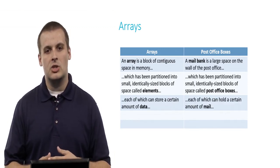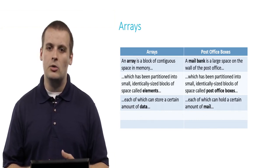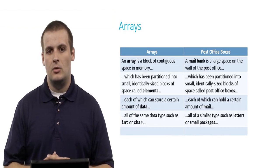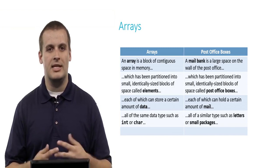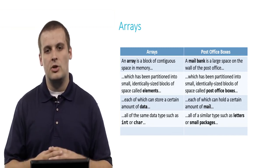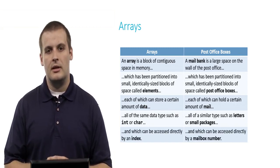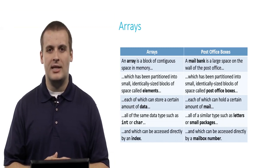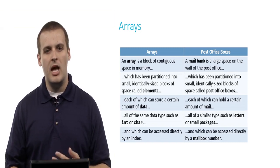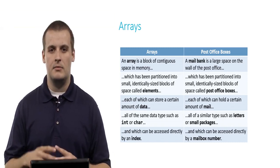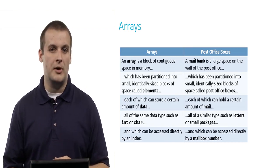Each element of the array can store a certain amount of data, just as each post office box is able to hold a certain amount of mail. What can be stored in each element of the array? It's variables of the same data type, such as int or char. Just like in your post office box, you can only fit things of a similar type, such as letters or small packages. Lastly, we can access each element of the array directly by index number, just as we can access our post office box by knowing its mailbox number. Hopefully that analogy helps you get your head around the idea of arrays.